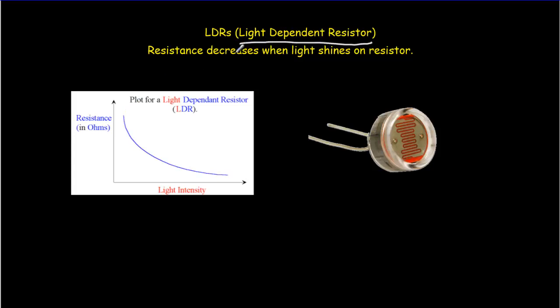The first is a light-dependent resistor, also called an LDR for short. And basically the resistance is going to decrease when light shines on the resistor. So if we shine some light onto the resistor here, R will get smaller. And we can see that in the graph here. Here we're getting more and more light as we go this way, and as we do so, the resistance keeps dropping and dropping.